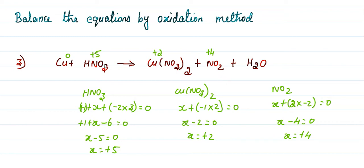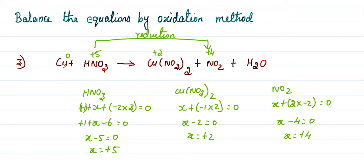Now oxidation and reduction. Nitrogen goes from plus 5 in HNO₃ to plus 4 in NO₂. Copper goes from zero to plus 2. Loss of electrons is known as oxidation reaction. So both oxidation and reduction reactions are present.